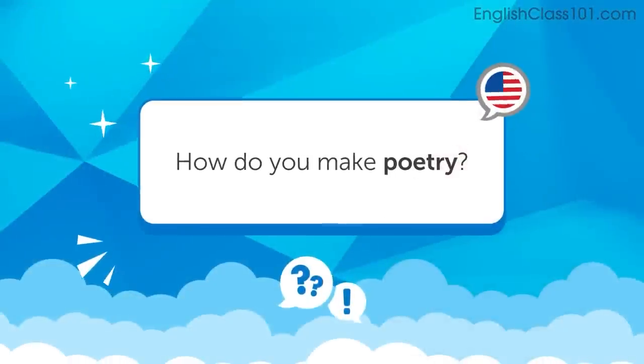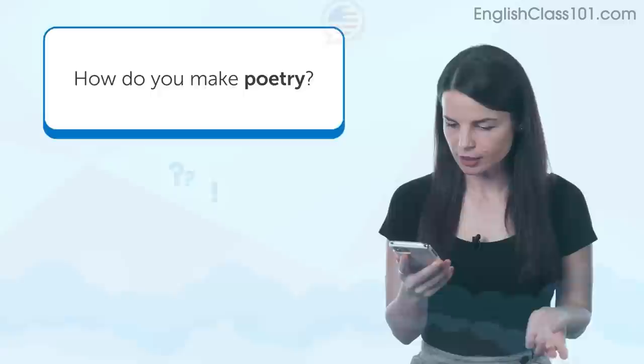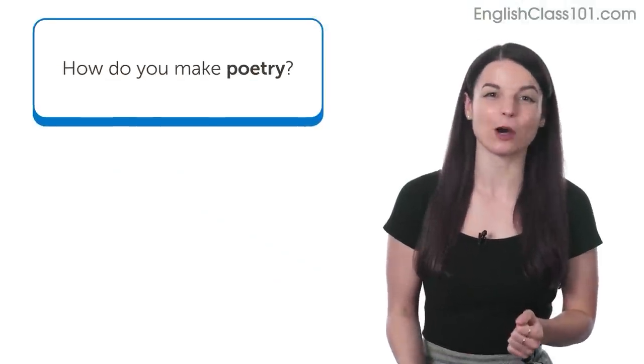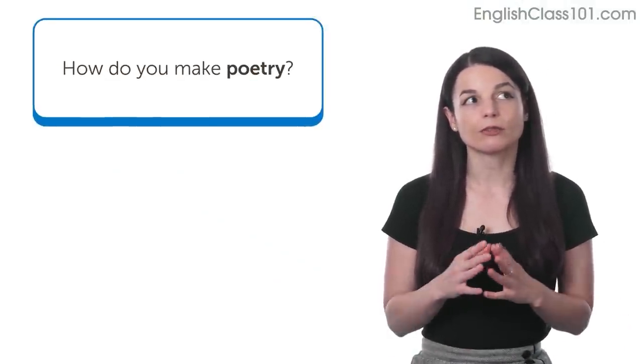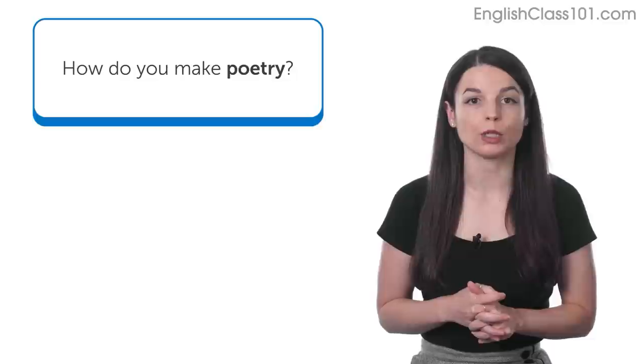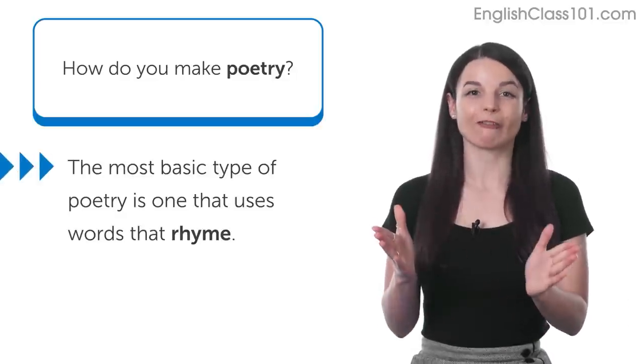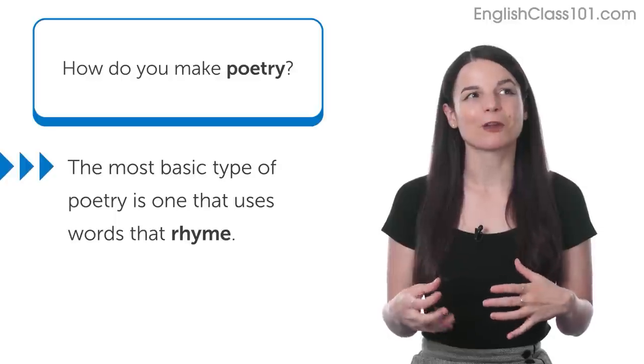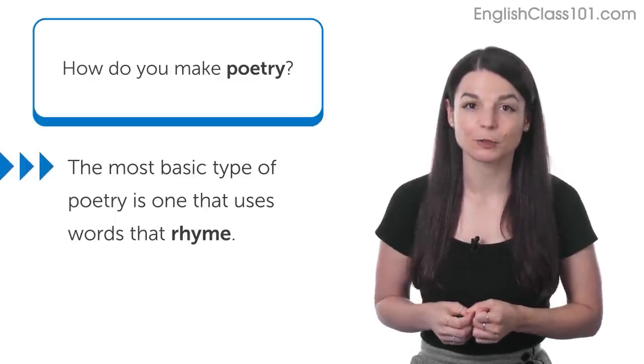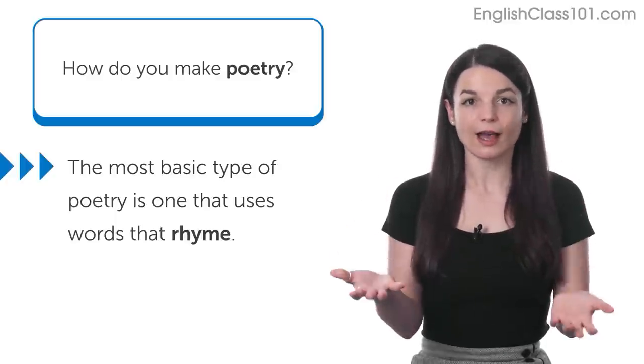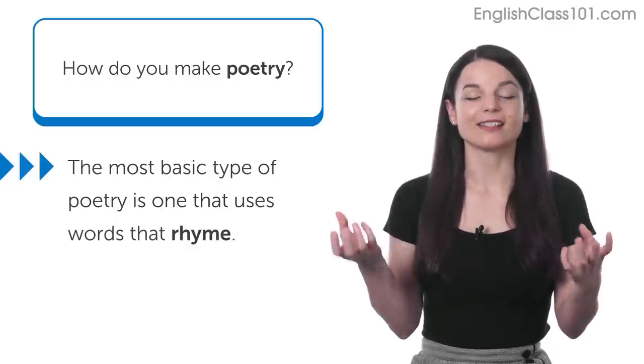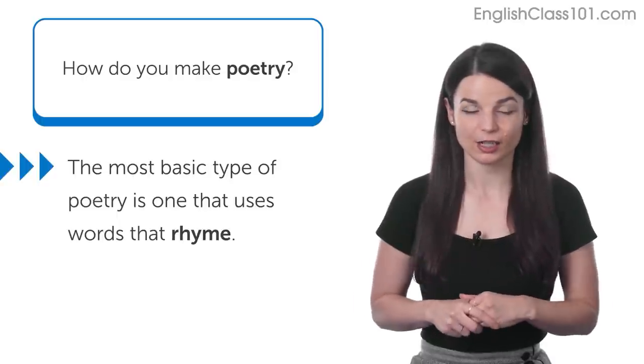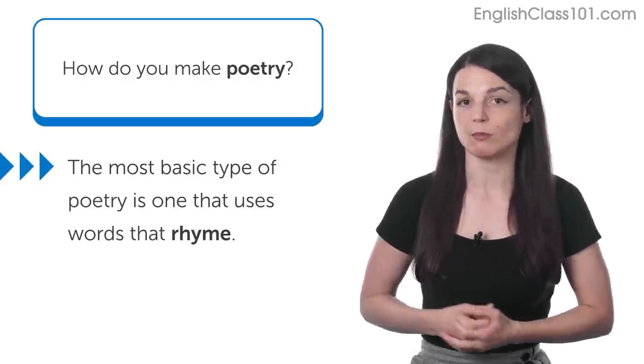First question this week comes from P. Kasi Viswanaham. I hope I said your name correctly. P. Kasi says, Please explain how to make poetry, Alisha. What a very nice question. Okay, poetry. So, we have a couple of different types of poetry that we can talk about. The most basic form that we learn usually when we are very little kids in school is about creating lines of text, creating sentences that have the same sound at the end. So, this is called a rhyme in English.